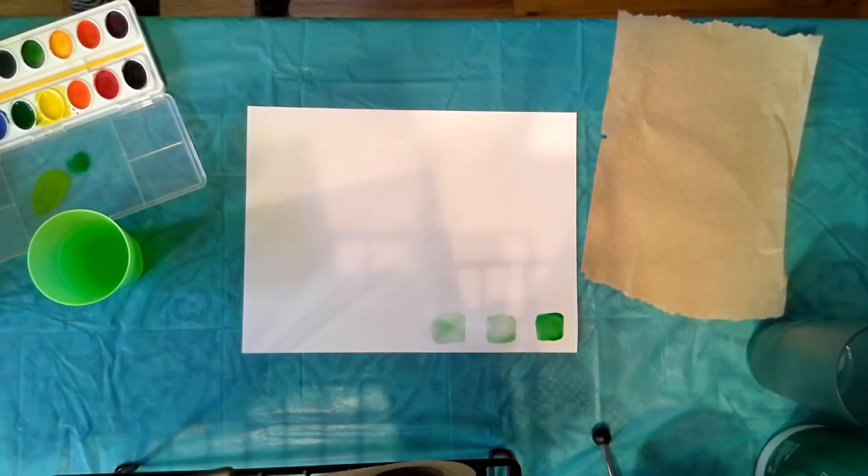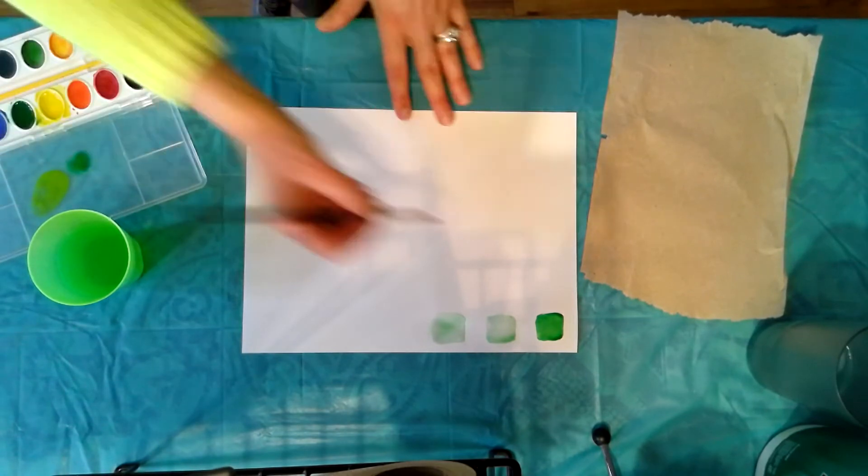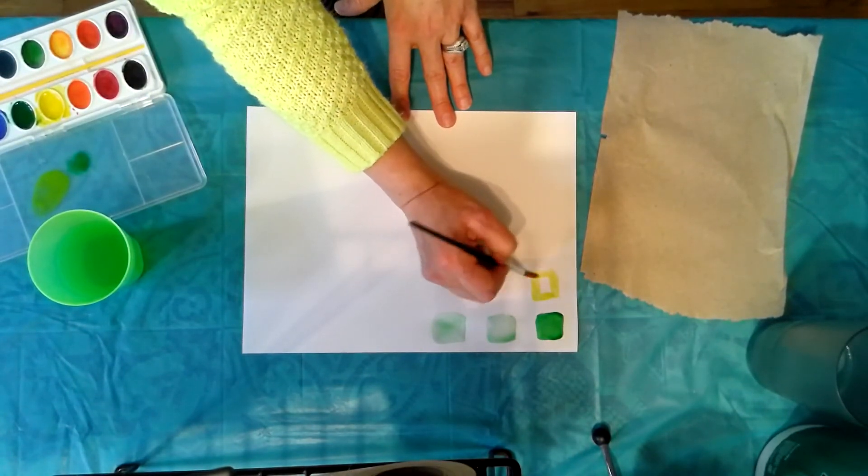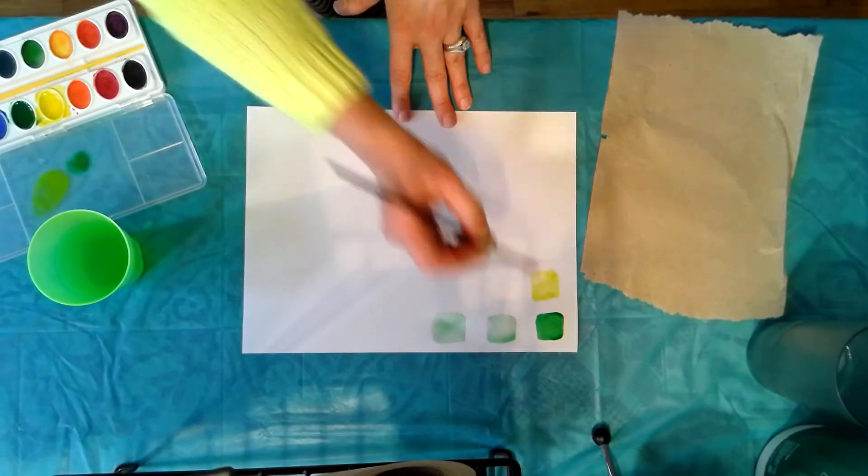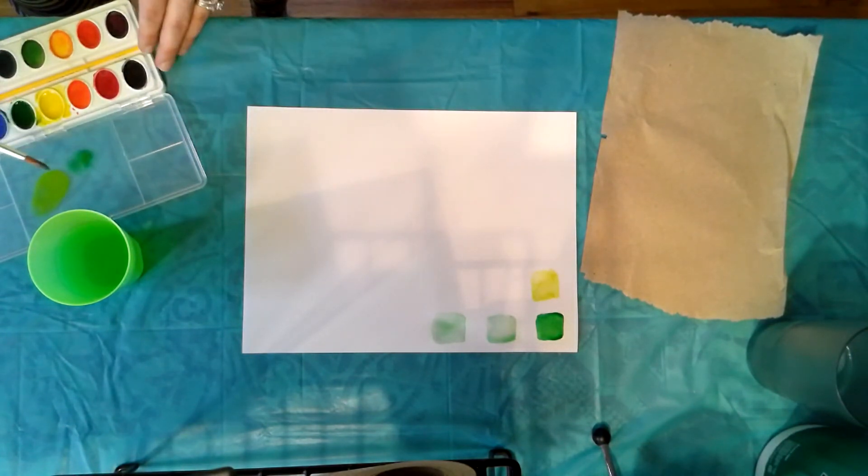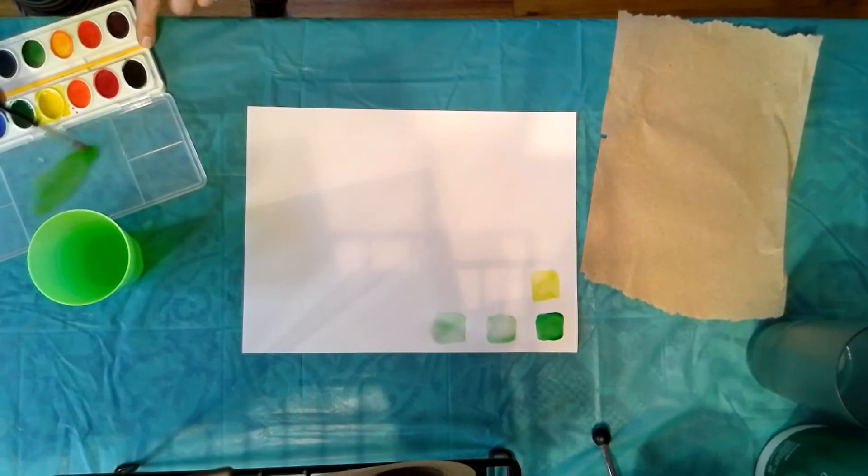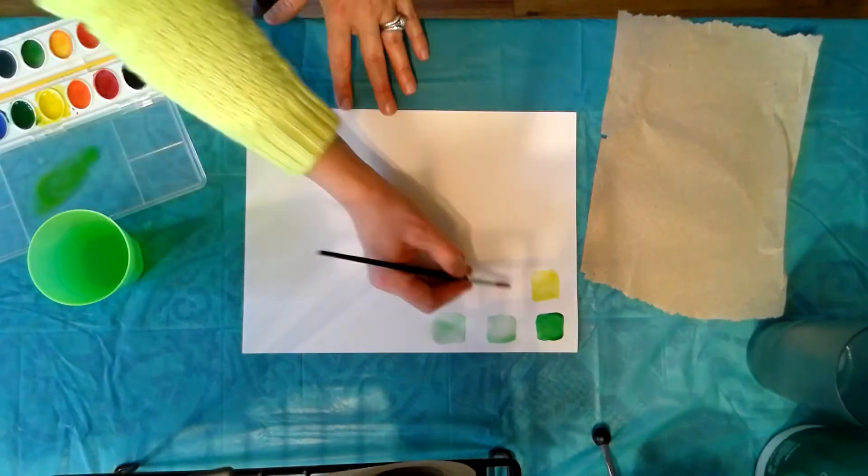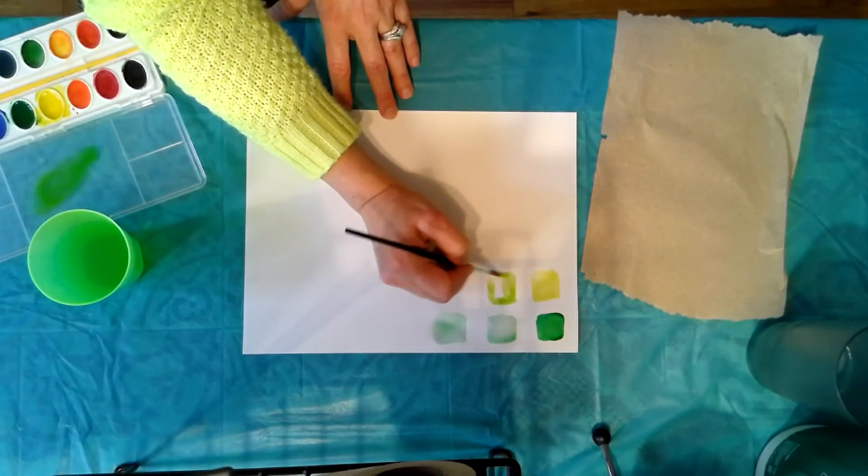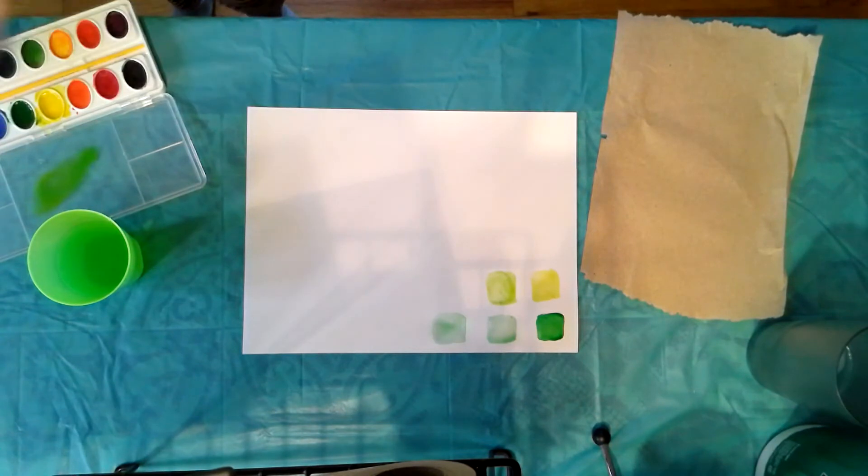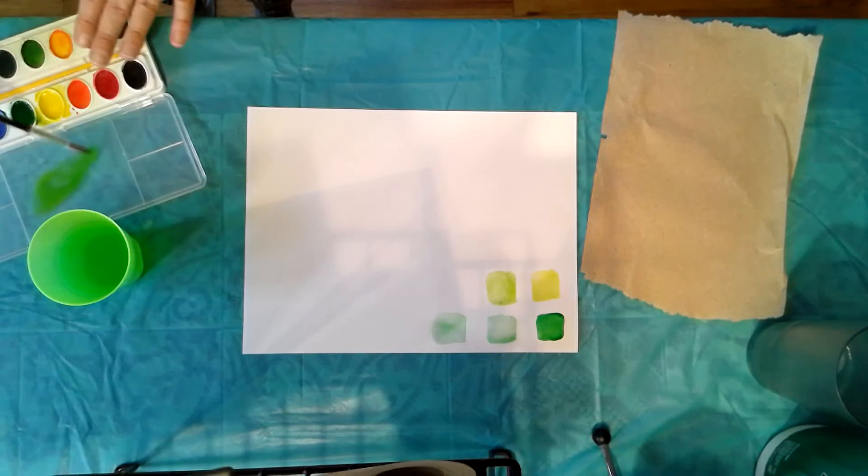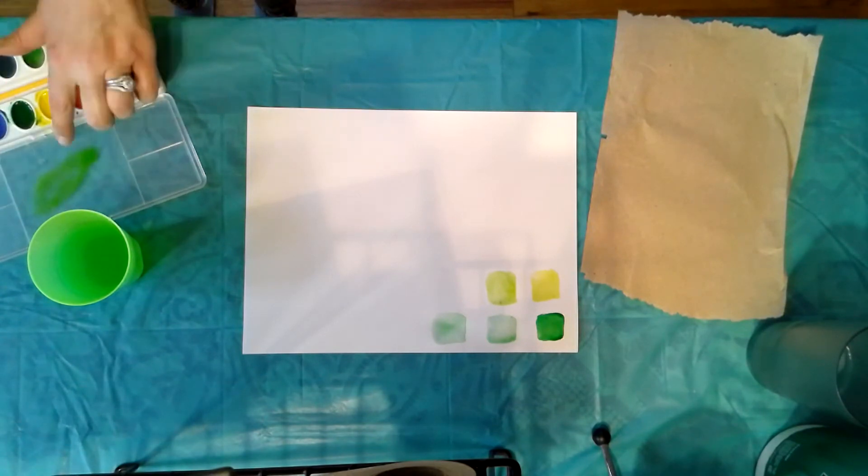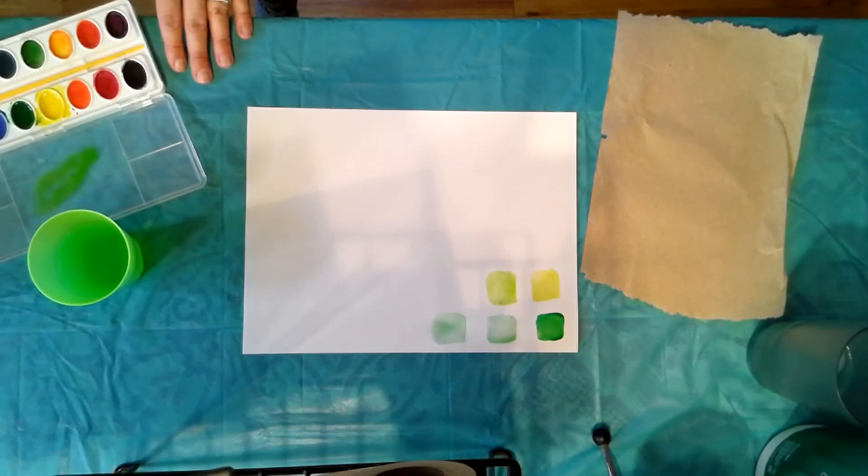And again, depending on how much yellow or how much green I add, I can change this color. This color has a lot of yellow in it. So I'm going to add some more green from my cover to this yellow to make a new color. Oh yeah, like mixing colors. Yeah, we're mixing colors. And we're keeping the paints here nice and fresh and clean, and we're not mixing them in the pans. We're mixing them in the lid because this can be wiped down.